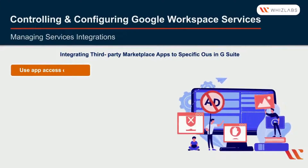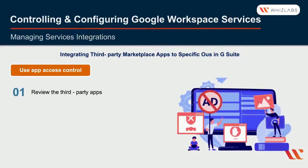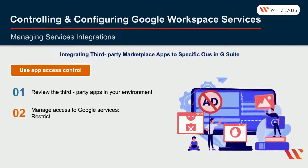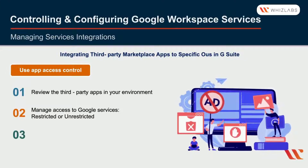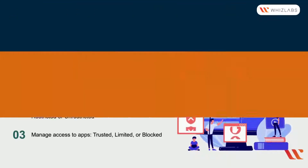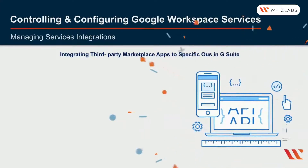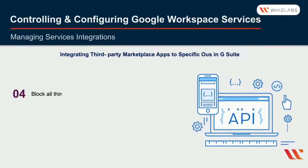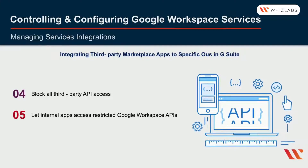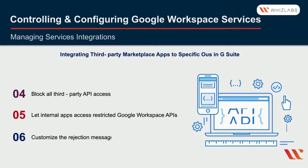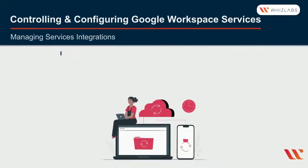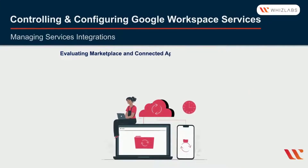To use app access control, you should review the third-party apps in your environment. You can manage access to Google services as either restricted or unrestricted, and manage access to apps as trusted, limited, or blocked. You can also block all third-party API access, let internal apps access restricted Google Workspace APIs, and customize the rejection message for the app.